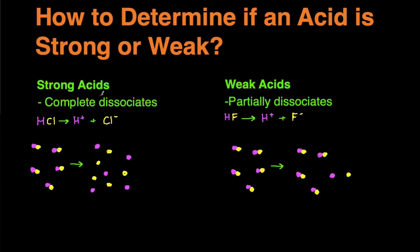Before we start, quick definition: strong acids are acids that completely dissociate, and weak acids are acids that partially dissociate. Dissociate means that the acid will break up into a proton, which is H+, and its conjugate base.